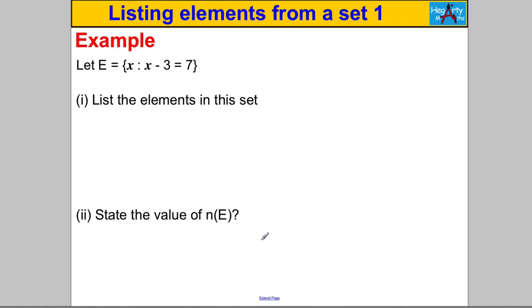Next one, pause the video, have a go. This one says let E be the set of x, the numbers x such that - remember that means such that - x subtract 3 is 7. What x values satisfy that? Well we solve it: x subtract 3 is 7, you add 3 to both sides and you get yourself x is 10. There is only one number that satisfies this: 10, because 10 subtract 3 is 7. So list the elements in this set: 10 is the only element in the set. And what's the value n(E)? How many elements in the set? There is only one element in the set.